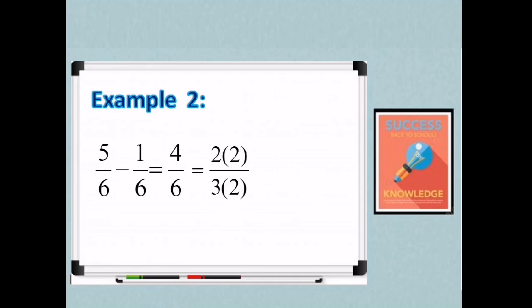So we can write 4 as 2 times 2 and 6 as 3 times 2. So therefore, the common factor is 2. So we can cancel the common factor which is 2. And then the lowest term of 4/6 is 2/3. So that will be our final answer.